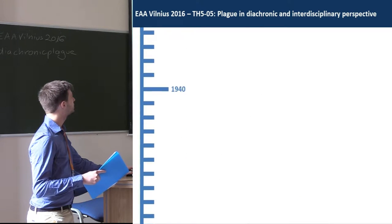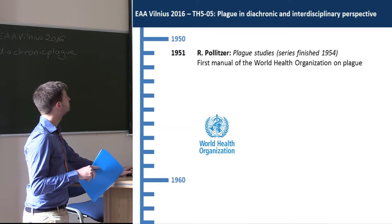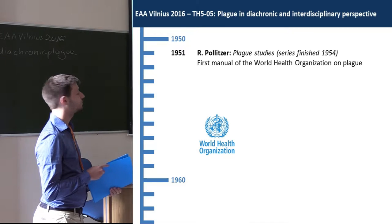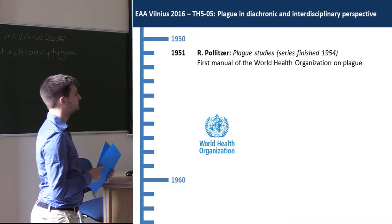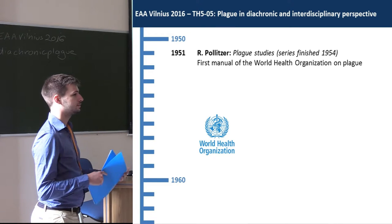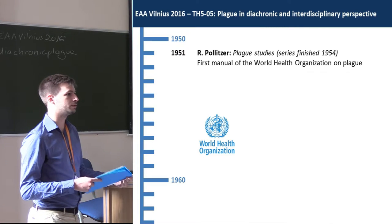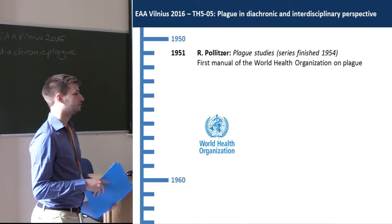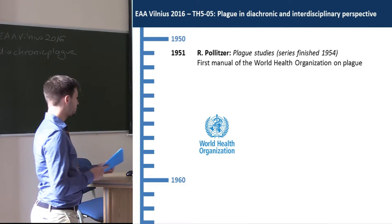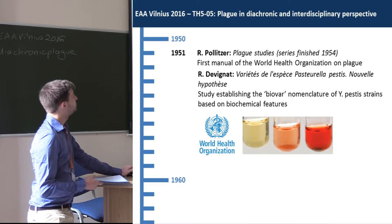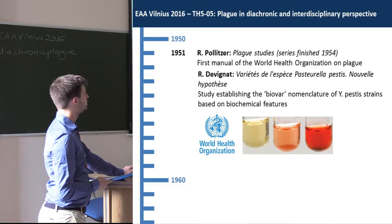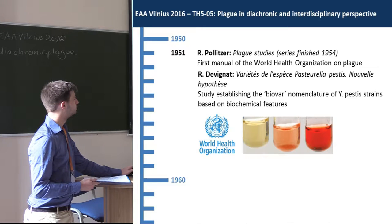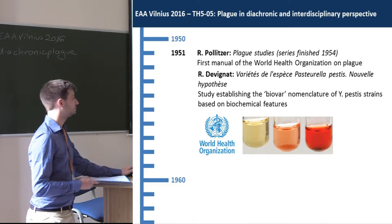Skipping some decades to the 1950s: in 1951 and later years, the first manual of the World Health Organization on plague was published by Pulitzer. There were also other plague studies published by the WHO, showing that plague remains a re-emerging disease in some countries. In the same year, there was a publication by De Vignard who established biovars based on the biochemical features of different strains of Yersinia pestis.